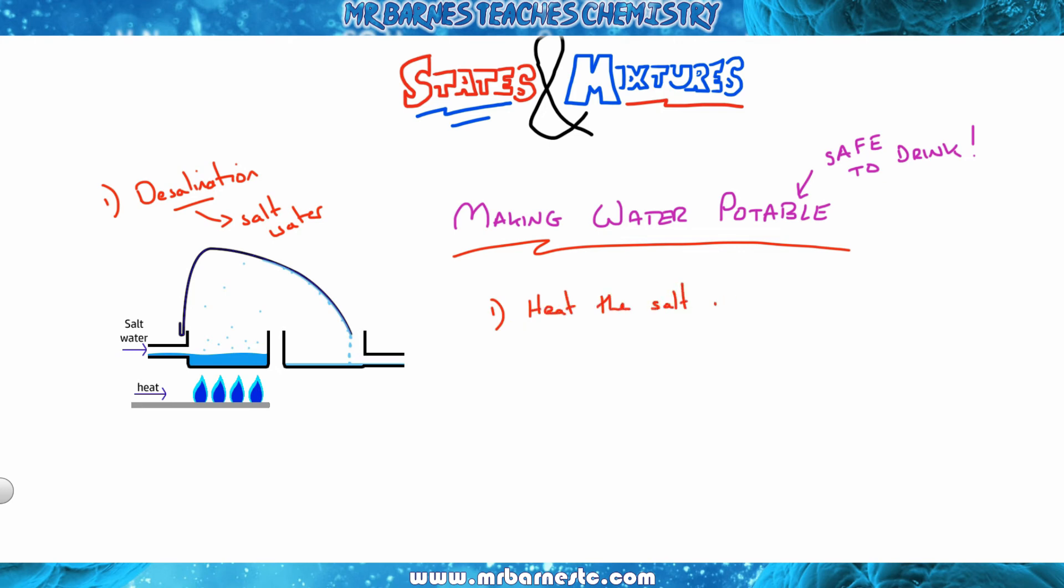What will happen is the salt will be left behind and the water will evaporate. When it hits the lid at the top here, it will condense, turning back into a liquid. It'll then run across the lid and down, and it will be collected separately in the pan on the right. One of your major disadvantages of desalination is it takes up a lot of energy.